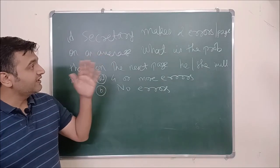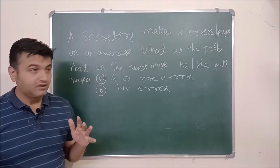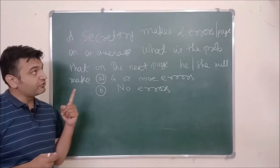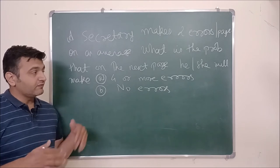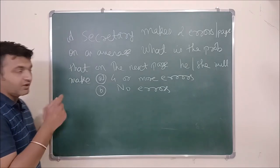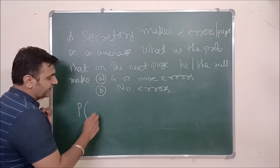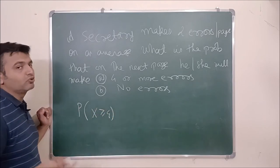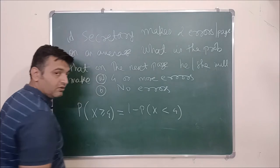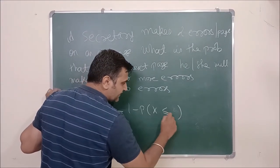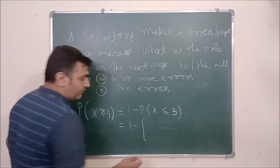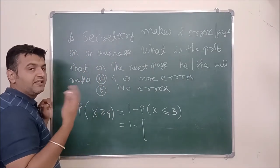Here is a question: a secretary makes 2 errors per page on average. What is the probability that on the next page he or she will make 4 or more errors? The average is given as 2 errors per page, and we need the probability for the next page — so Poisson distribution applies. Let X be the number of errors per page. We need probability that X is greater than or equal to 4, which equals 1 minus probability that X is less than or equal to 3.